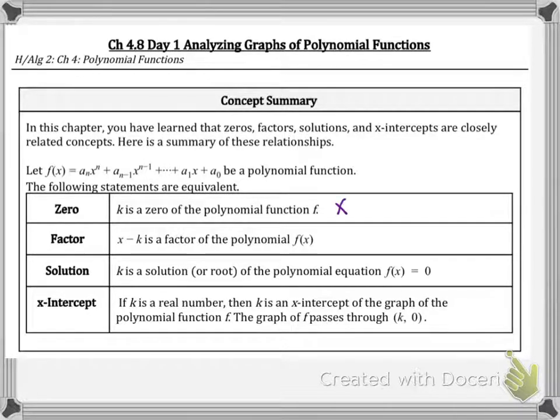This is when we say x equals 3, or x equals negative 2, for example, those are the zeros. X minus k is a factor of the polynomial, so we write it in factored form. That would be x minus 3, for example, and x plus 2.